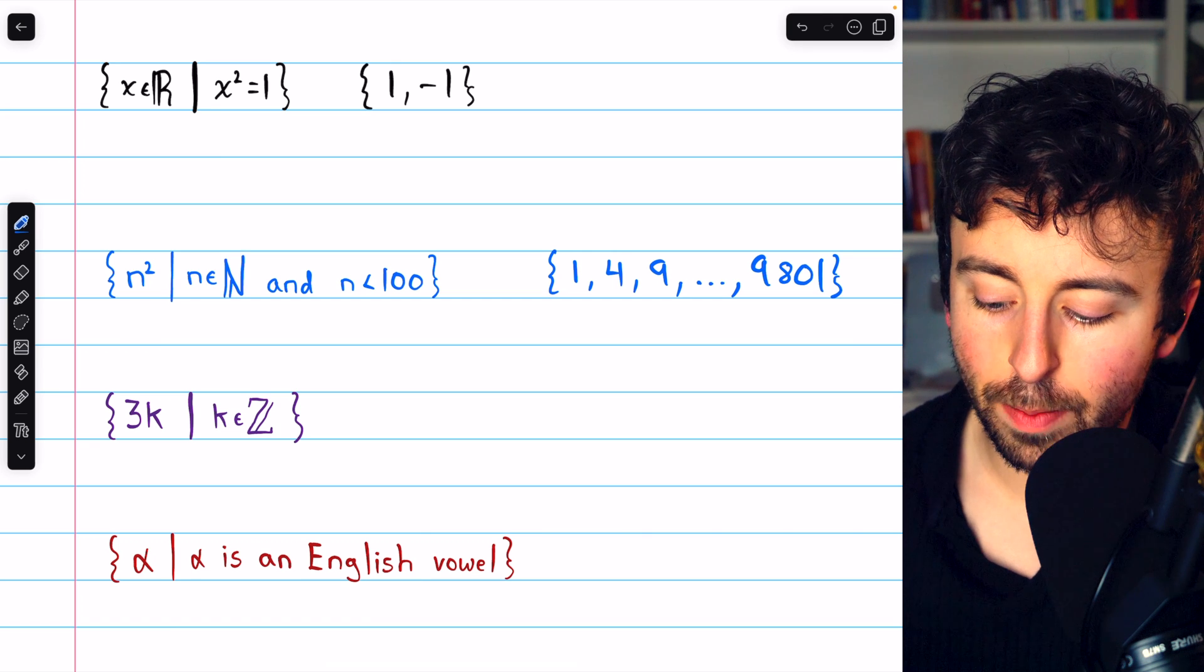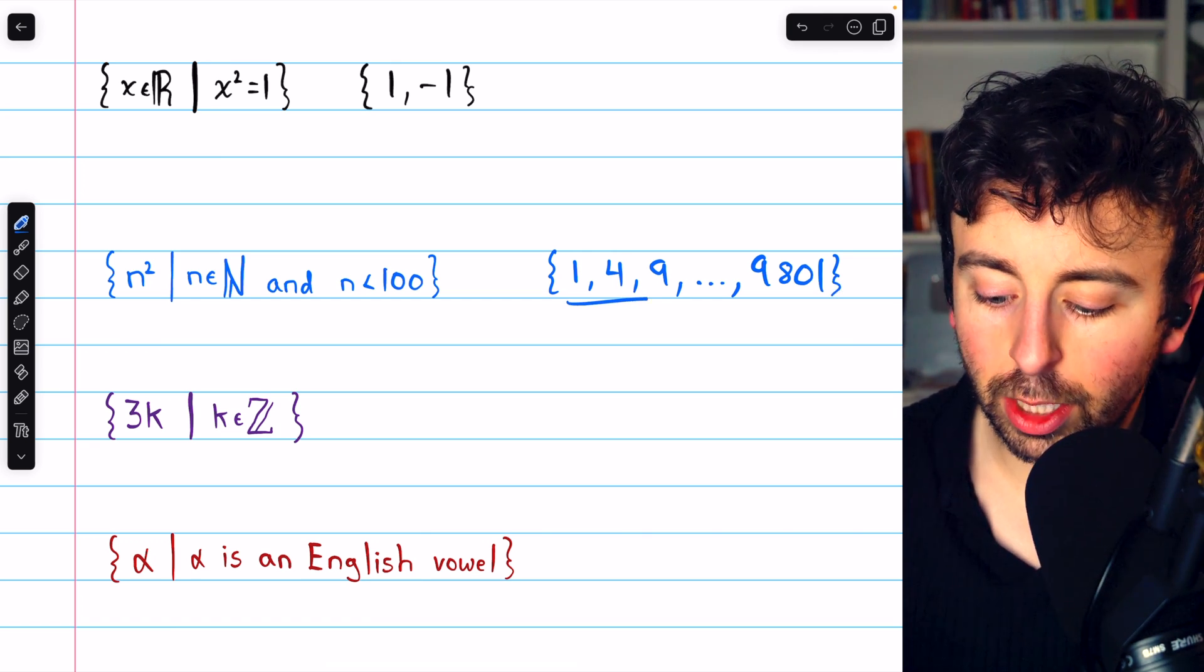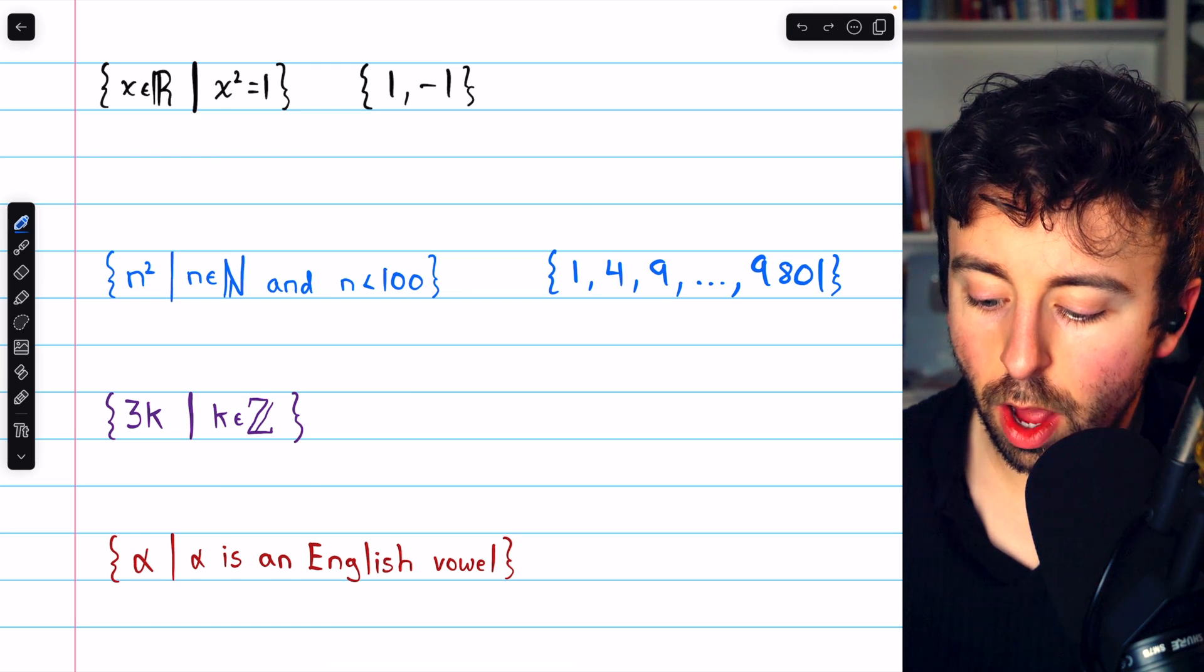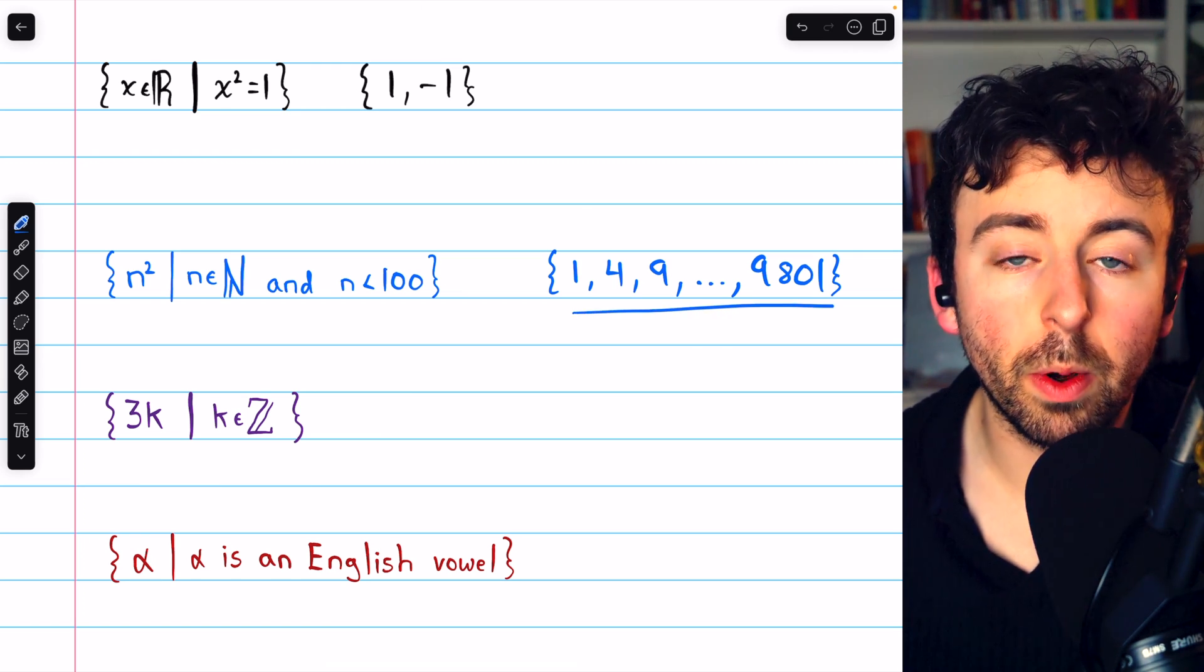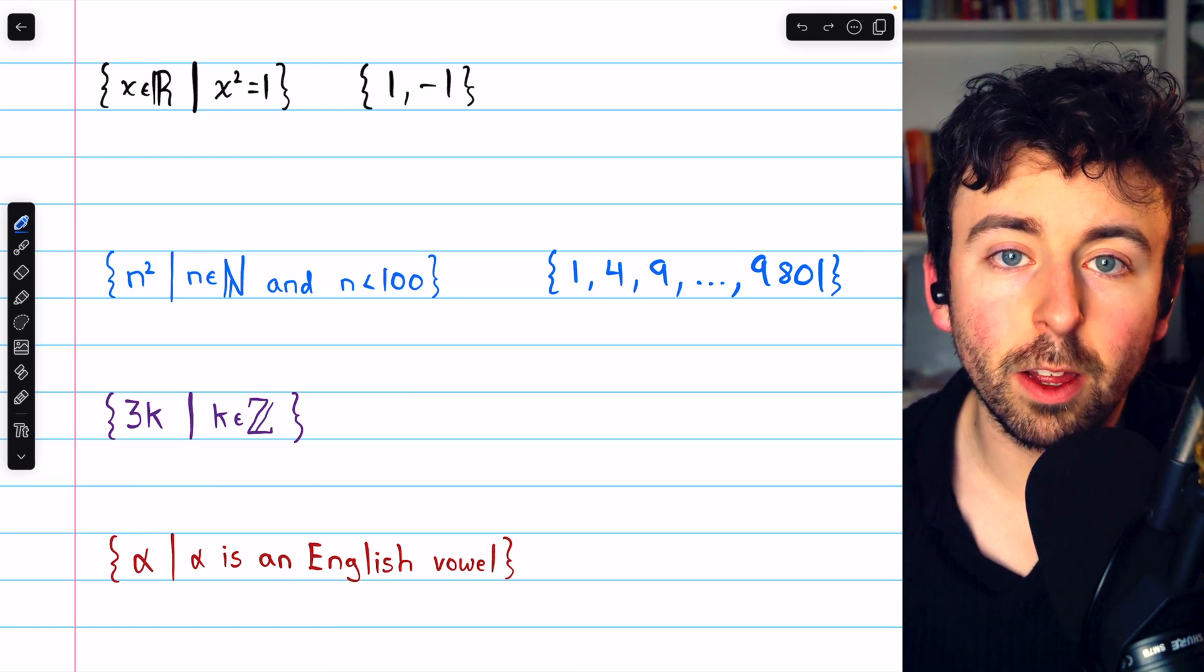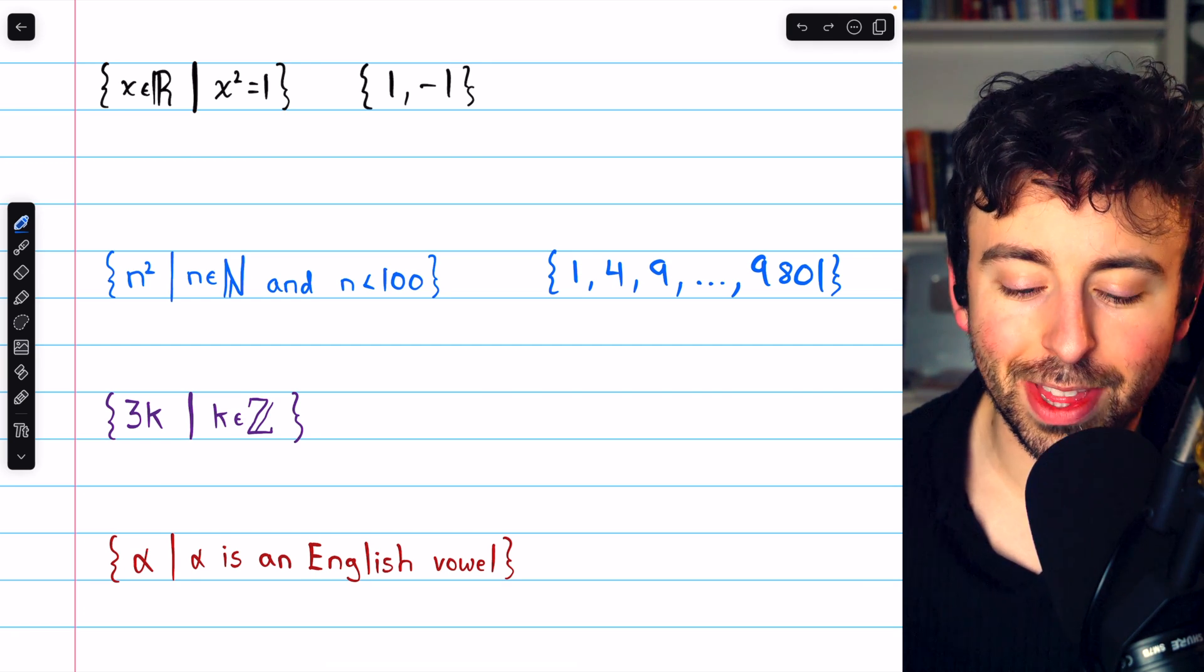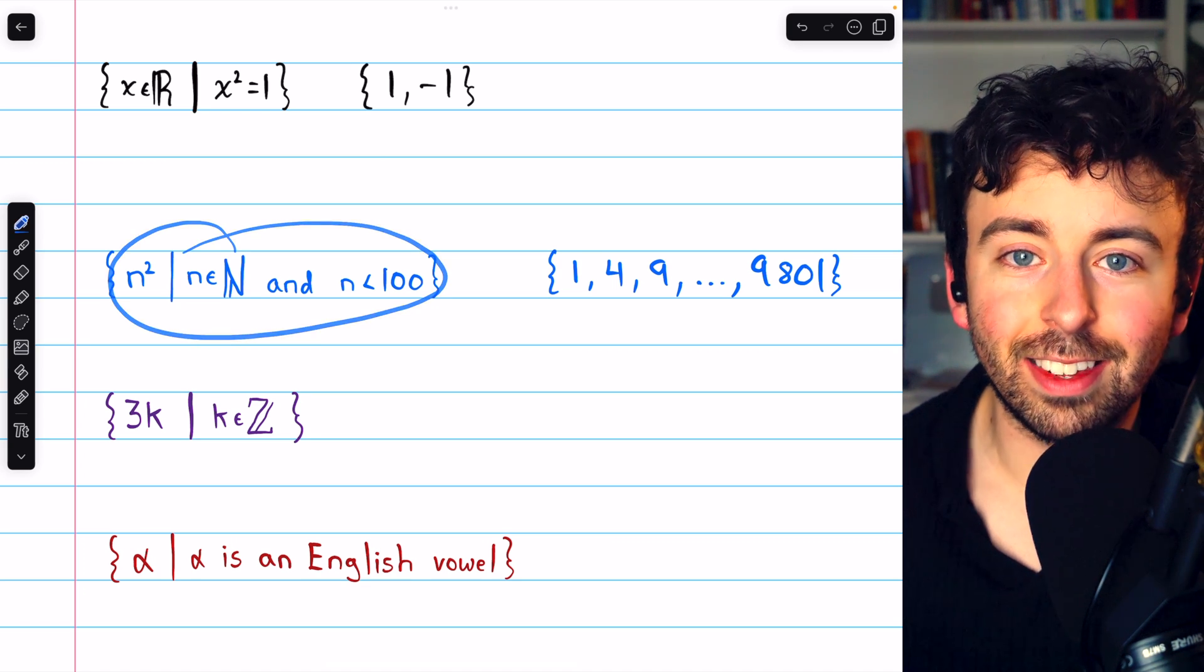And then I can close my set brackets. So here I list a few elements of the set so you can see that it's the square numbers, and then just go all the way up until the final square that I want included, which is 9,801. The next square number is when n equals 100 and we square that, but that does not belong in this set.